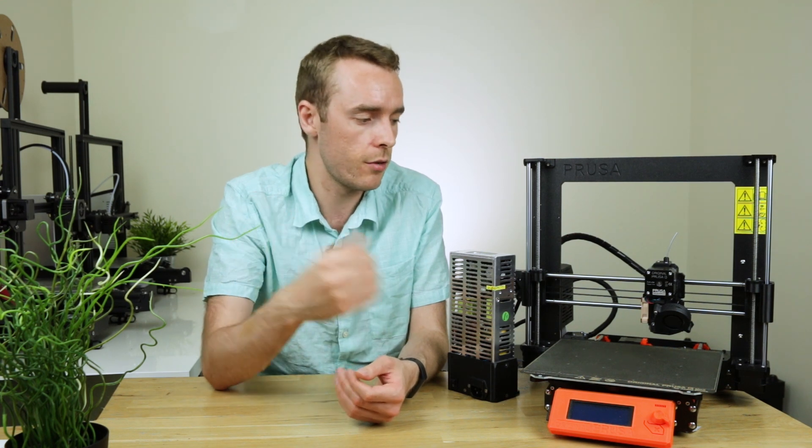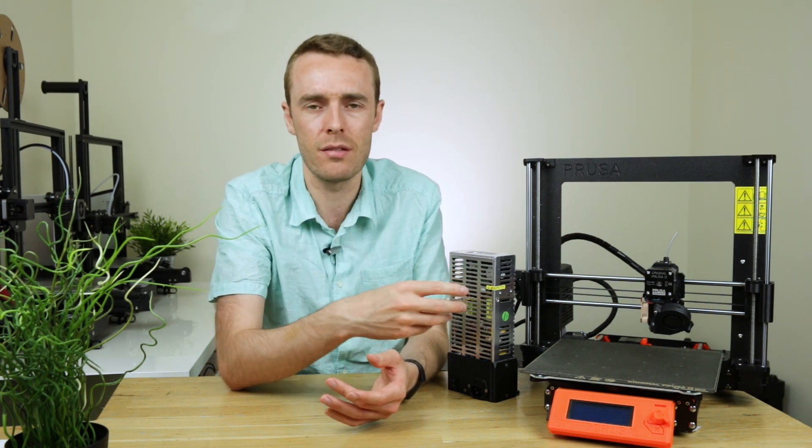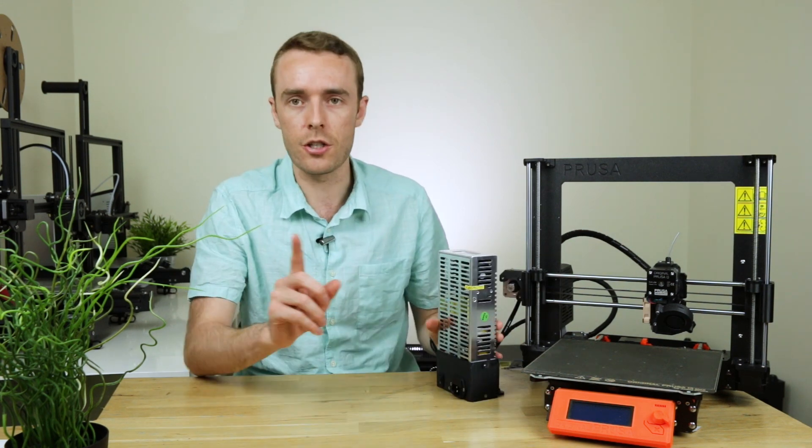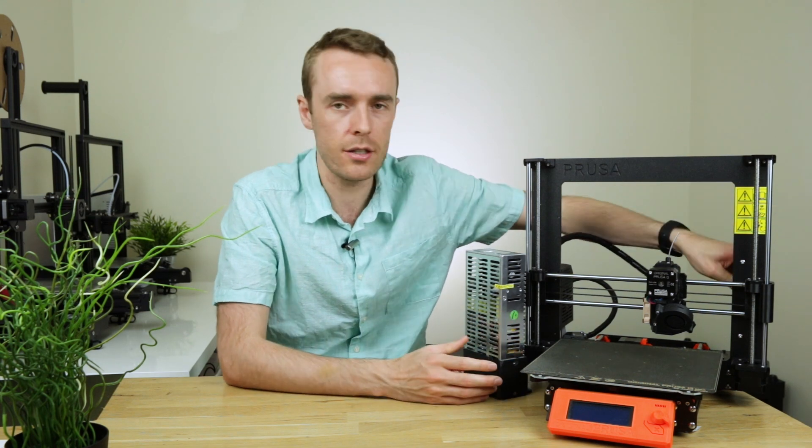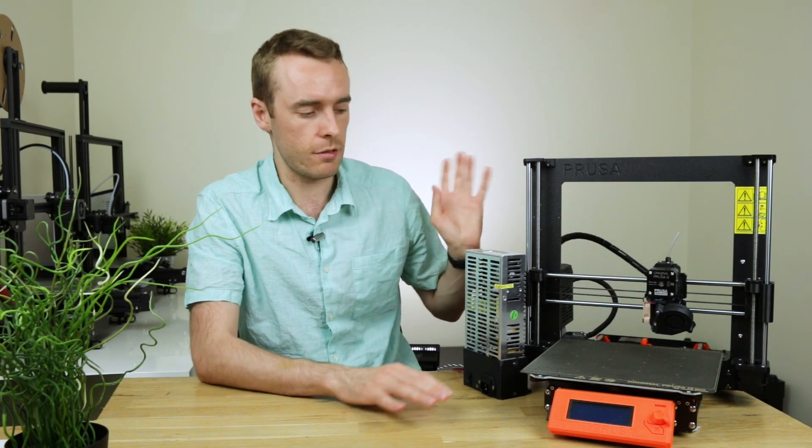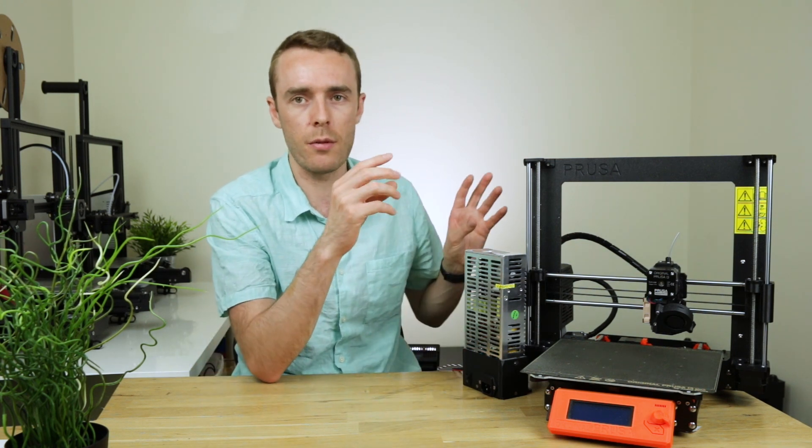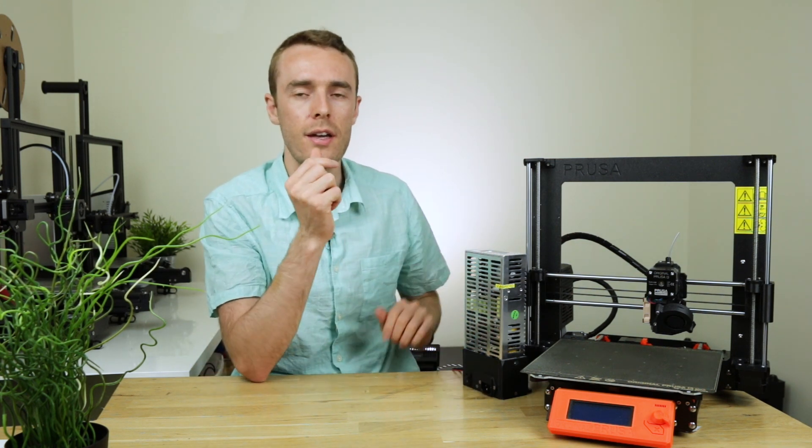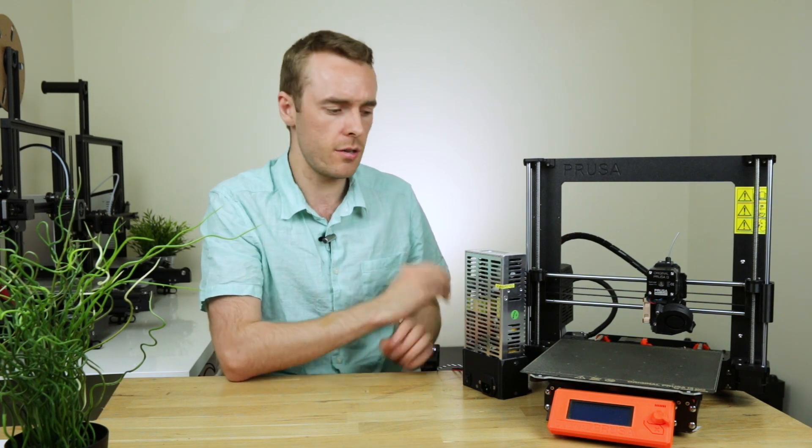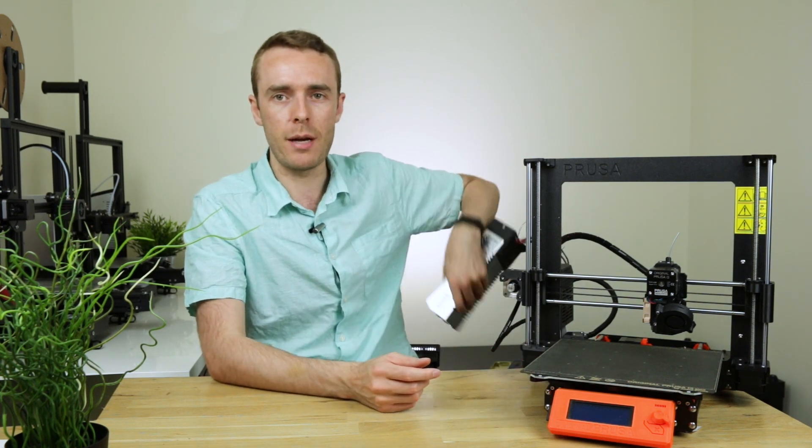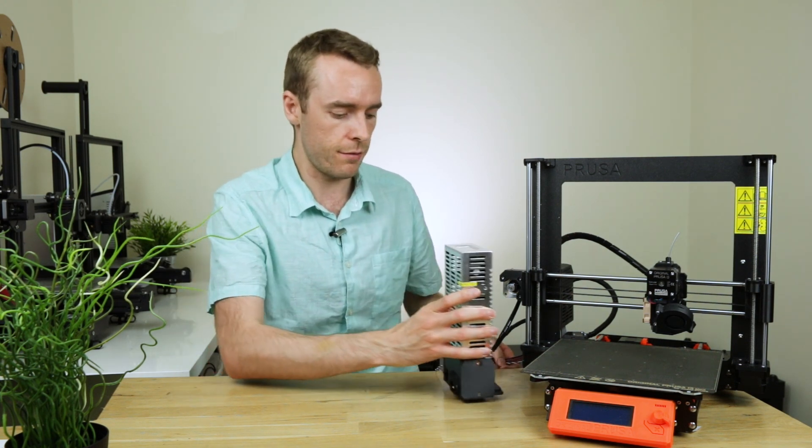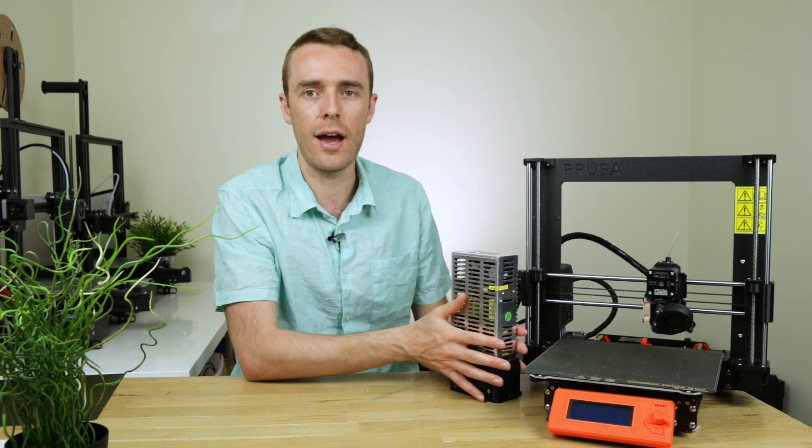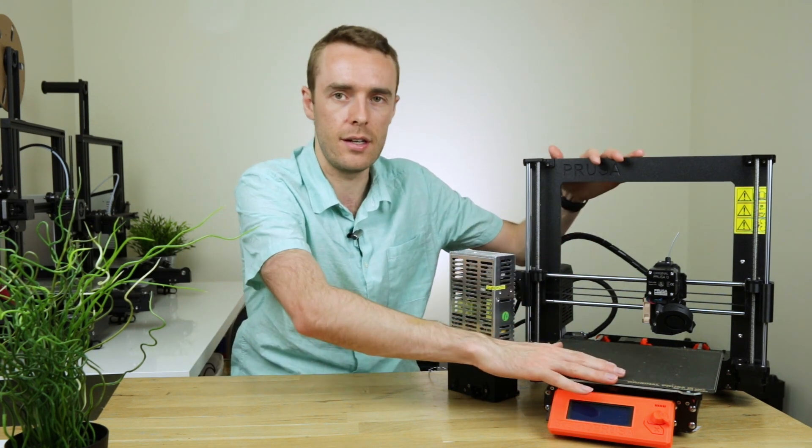Just so you know, the reason the power supply is sitting over here and not mounted on this side like it should be is not because it's fallen off or broken or anything like that. It's simply because I'm now using my Prusa i3 Mark 3 in an IKEA Lack enclosure. So I'm using the power supply mounted underneath at the back. So this is outside of the enclosure while this is in the enclosure.